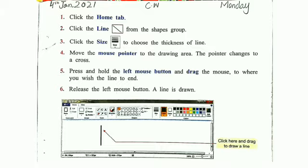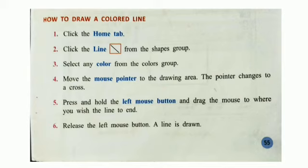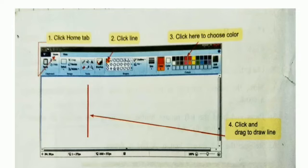Number four: move the mouse pointer to the drawing area. The pointer changes to a cross. Ab aapne again drawing area tak mouse pointer ko move karna hai. Aap dekhenge ka pointer joh hai wo cross me change hoogya hai. Number five: press and hold the left mouse button and drag the mouse to where you wish the line to end. Number six: release the left mouse button. A line is drawn. In this picture you can see the steps.